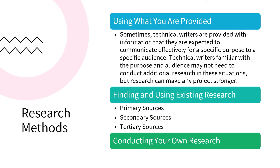The amount of research you need to do will depend on what you know and what you need to know. There are two kinds of research to consider: finding and using existing research — work that's already been done. When people actually do research and publish or share those results, those are primary sources. When people discuss, analyze, and interpret the work and studies that other people have done, we call those secondary sources.